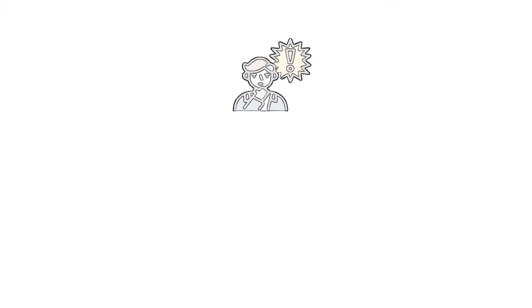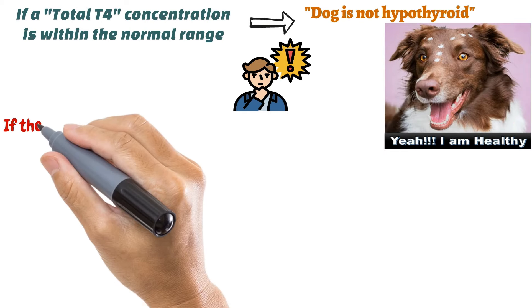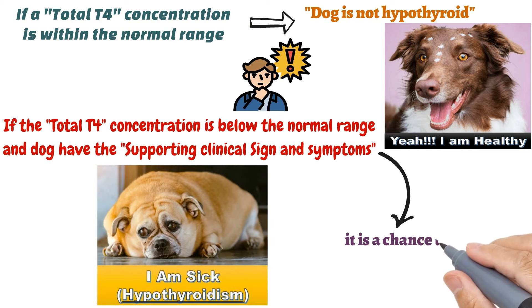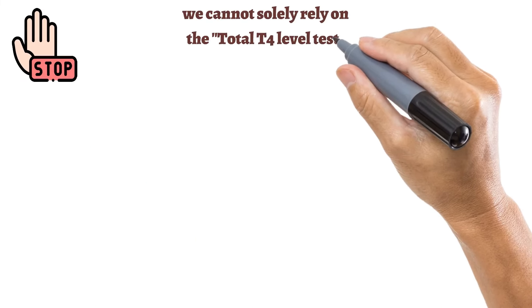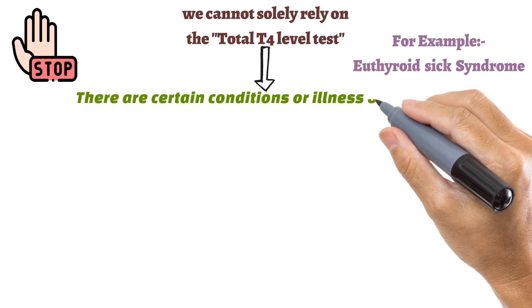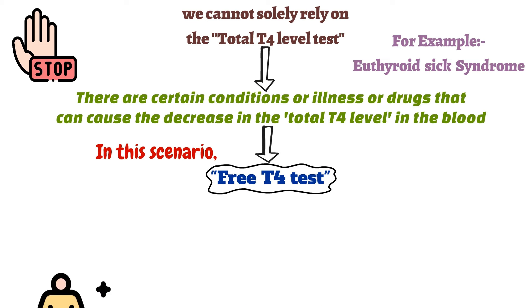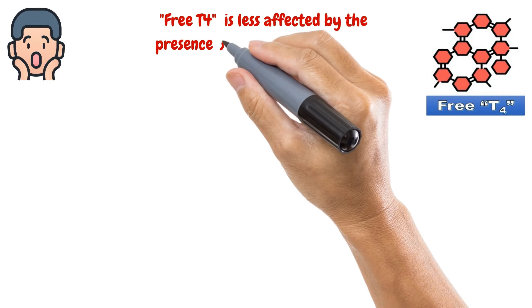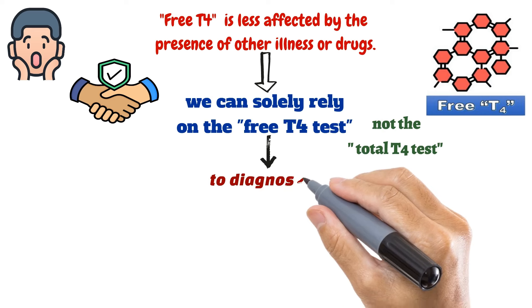The total T4 test measures both forms of T4 and is the cheaper option compared to the free T4 test. If total T4 is within the normal range, the dog is not hypothyroid. If total T4 is below normal and the dog has supporting clinical signs, hypothyroidism is possible. However, we cannot solely rely on total T4 because certain illnesses or drugs can also decrease total T4 levels — this is where the free T4 test is valuable. Free T4 is less affected by other illnesses or drugs.